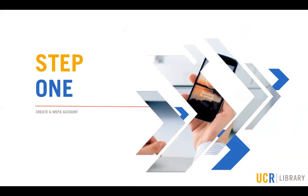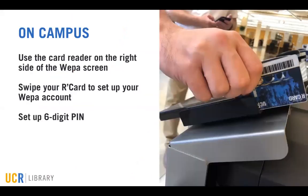Step one — here's how to create your WEPA account. If you're on campus, simply walk up to the closest WEPA kiosk and swipe your R card on the right side of the screen, and then set up a six-digit PIN.